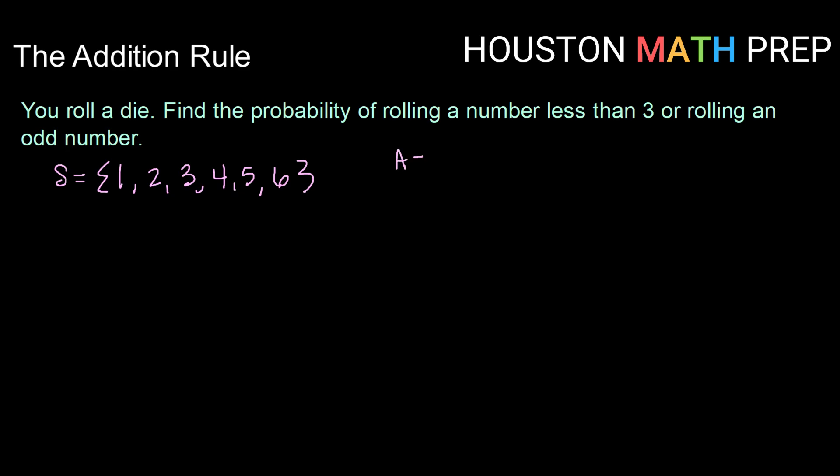Let's call event A the event of rolling a number less than 3. Less than 3 would include 1 and 2. Let's call event B rolling an odd number. That would be 1, 3, and 5. When we take a look at these two events, we notice they do have overlap. 1 is in both events A and B, so A and B are not mutually exclusive.